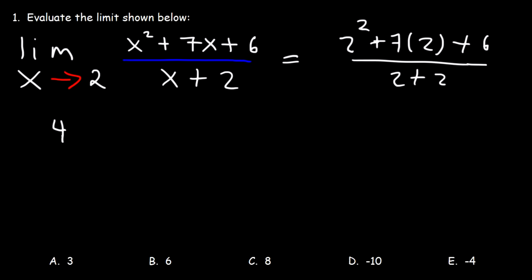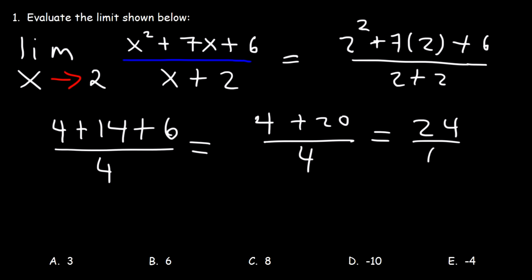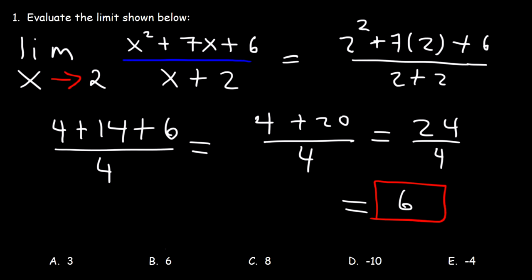Now 2 squared is 4, 7 times 2 is 14, plus 6, and 2 plus 2 is 4. Now 14 plus 6 is 20, and 20 plus 4, that's 24. And 24 divided by 4 is 6. So this is the value of the limit, which means that answer choice B is the correct answer.